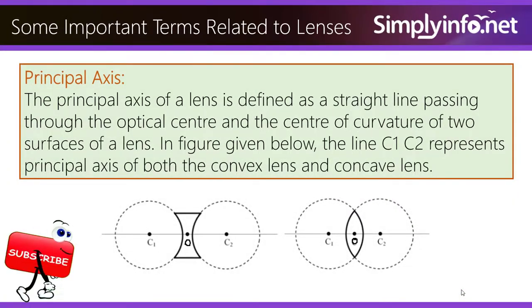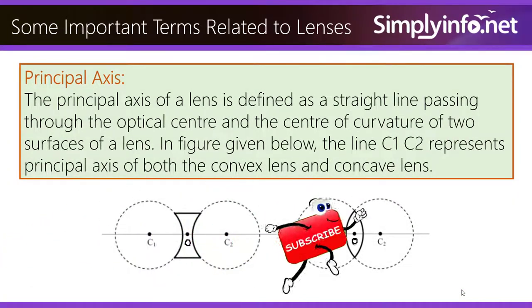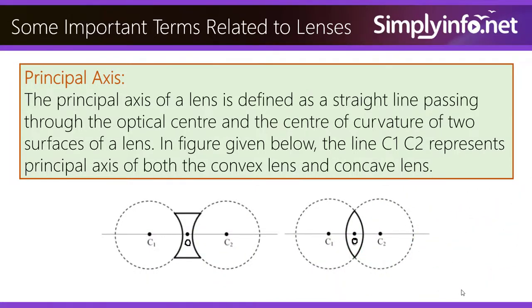Principal Axis. The principal axis of a lens is defined as a straight line passing through the optical center and center of curvature of two surfaces of a lens. In the figure given below, the line C1, C2 represents the principal axis of both the convex and concave lens.